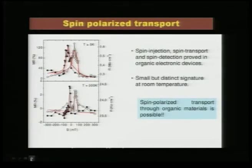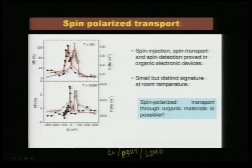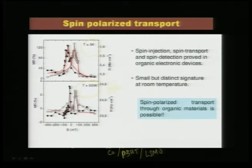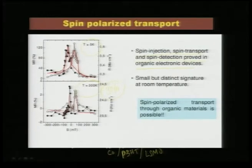The limitation so far is that you cannot grow a good interface because of the roughness from the inorganic layer and because of the growth mode of the organic layer. Nevertheless, for the cobalt/P3HT/LSMO device, you can see magnetoresistance at 300 K and at 5 K — the response at 5 K is sufficiently remarkable, and there is a faint response of about 3 percent at 300 K. This is not a bad number considering metallic multilayers at room temperature. Spin injection, spin transport, and spin detection are seemingly proved in this organic electronic device, with small but distinct signatures at room temperature.